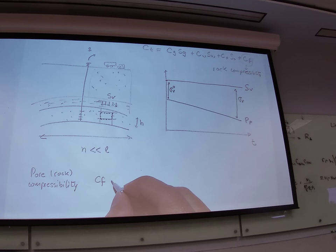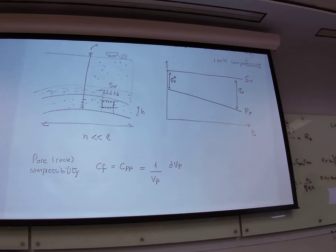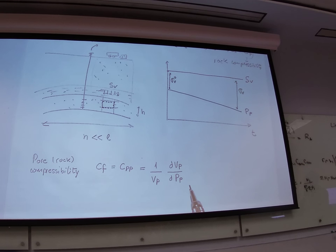So the CF, pore compressibility, raw compressibility. In geomechanics, we have a little bit more of a strict definition. We call it CPP. It's the same thing. The definition is this is a change in pore volume, percentual change of pore volume, that's why it's divided by the original pore volume, due to a change in pore pressure. This tells me how much the pore space is going to change if I change the pore pressure.